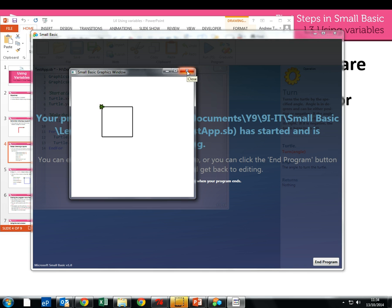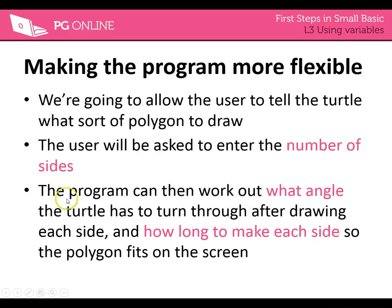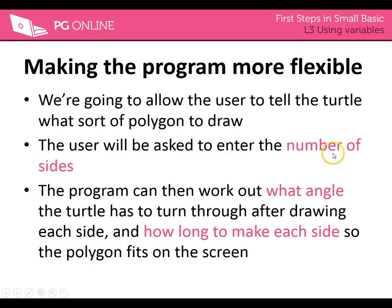So the next step is obviously going to be changing the angles. What we want to do is make it a bit more flexible so that at the moment we've written all the code and it only follows one process. We need to work on getting the turtle to change what it's going to do depending on the input we give it — we're going to tell it what sort of polygon to draw. To do that we're going to ask the user how many sides they want the polygon to be, and then put in a formula or calculation to work out what angle the turtle is going to be working through.